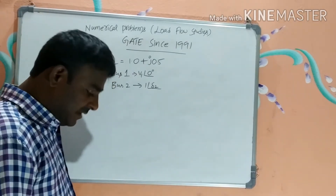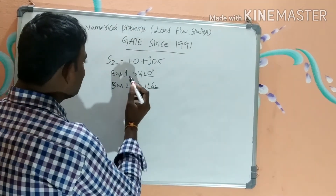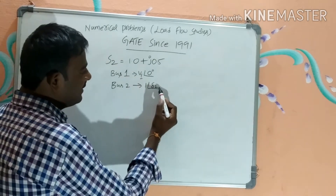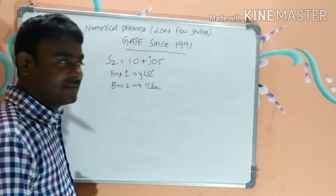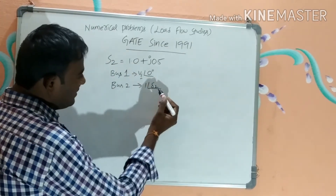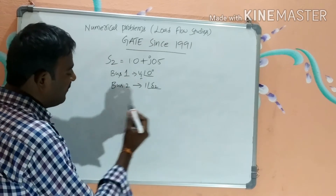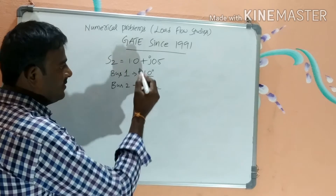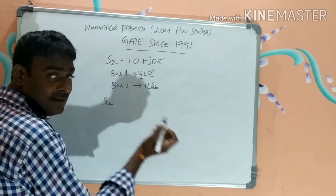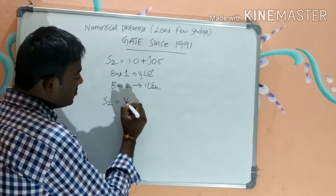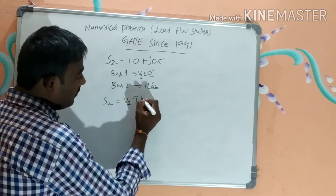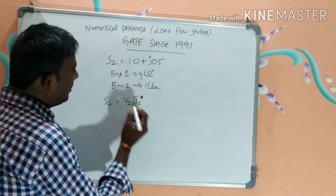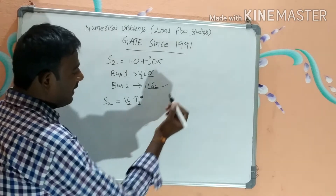We need to find voltage V1 for the first bus and delta2, the phase angle for the second bus. To find this voltage and phase angle, I am finding the power and equating. The apparent power is given by S2 = V2 × I2 conjugate. V2 is already given as 1 at angle delta2.